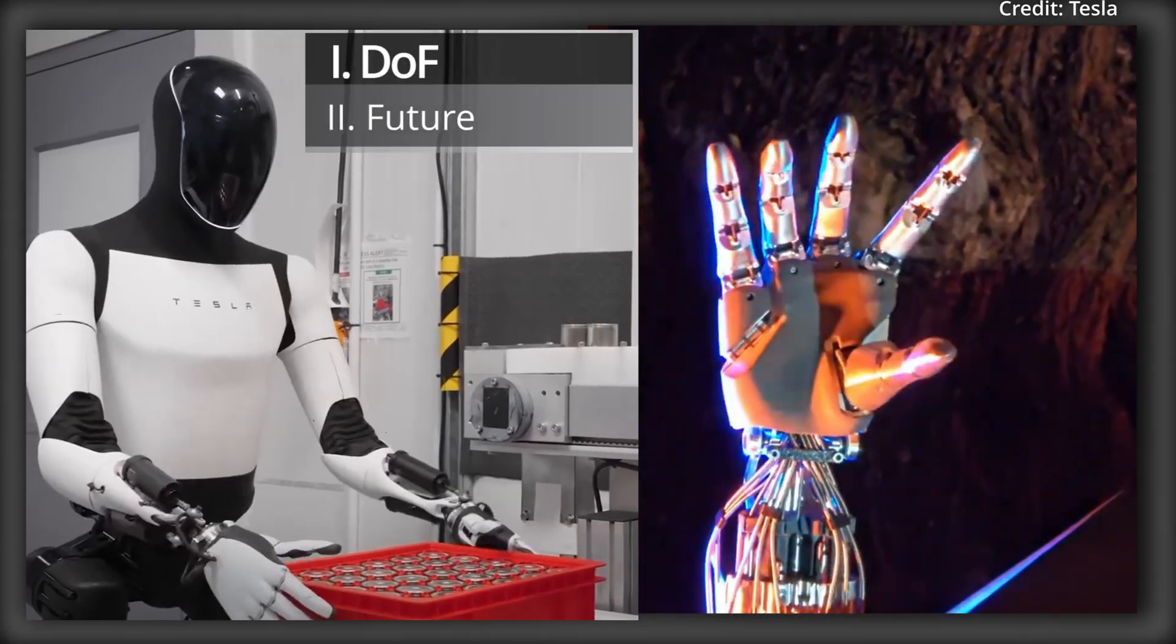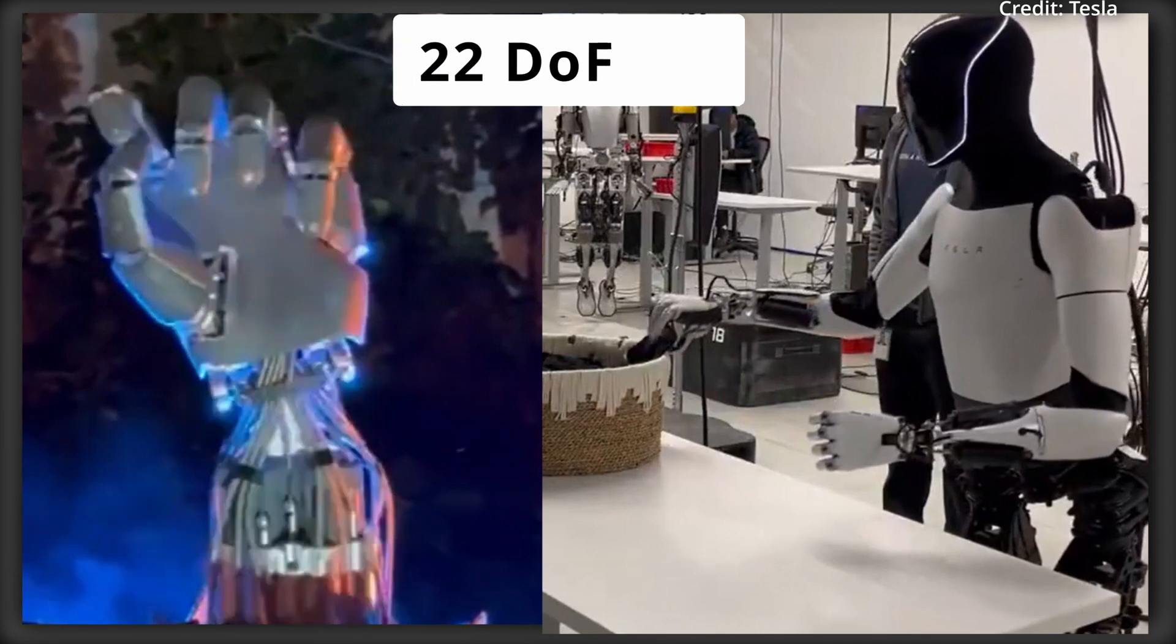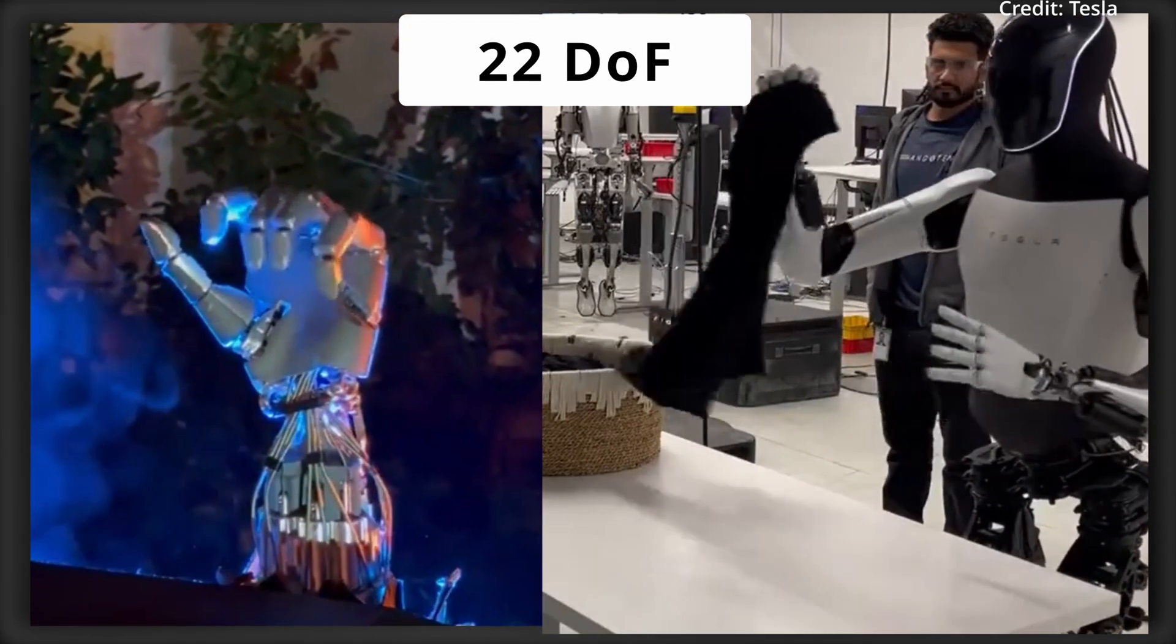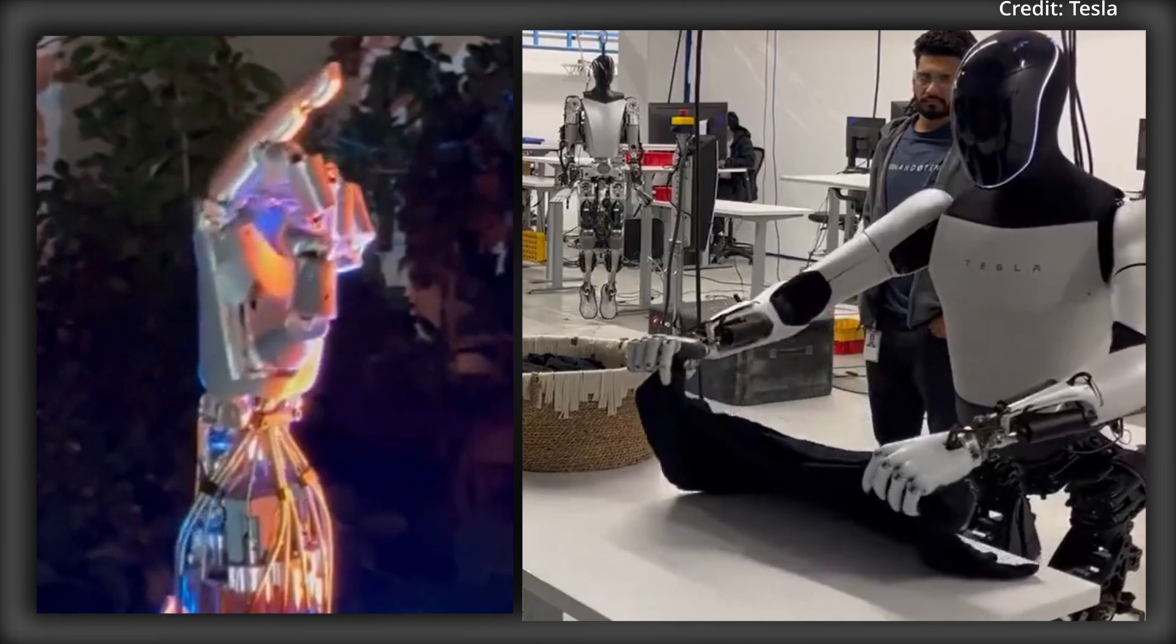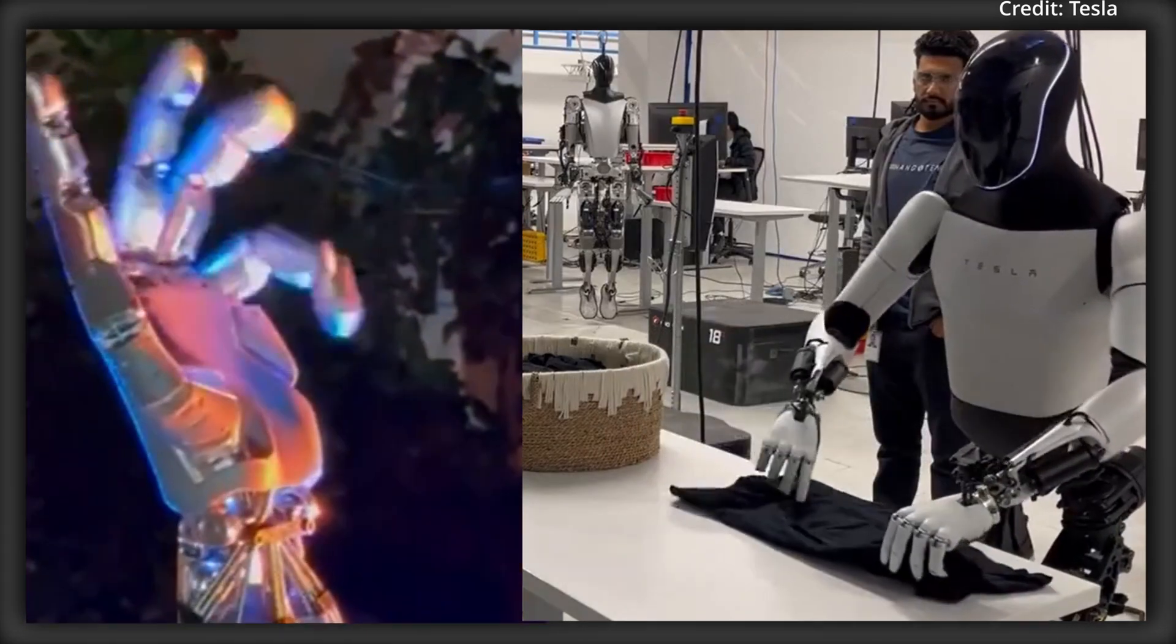Additionally, the Optimus Gen 3 has 22 degrees of freedom in each hand, with this intricate setup being developed using physics-based principles, plus sensors and components that were all built from scratch.